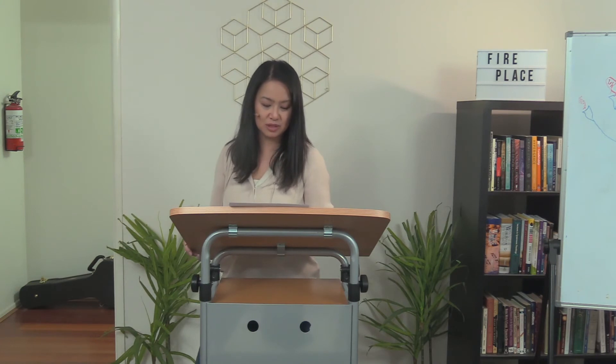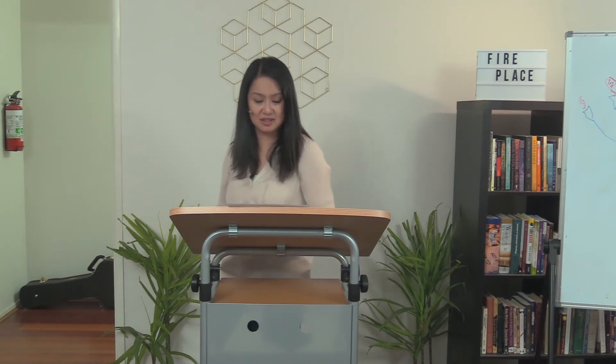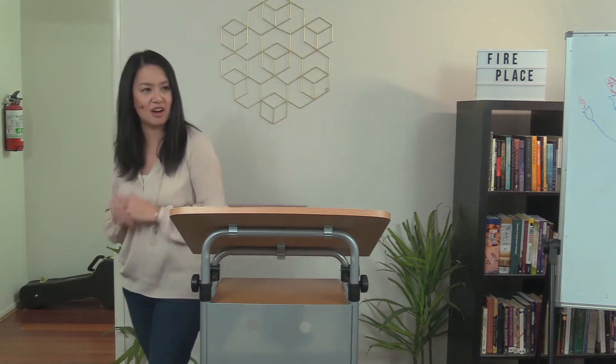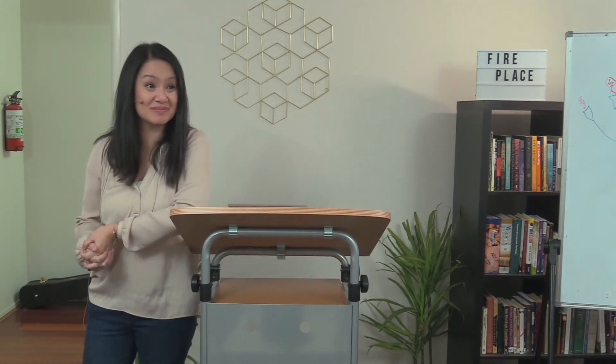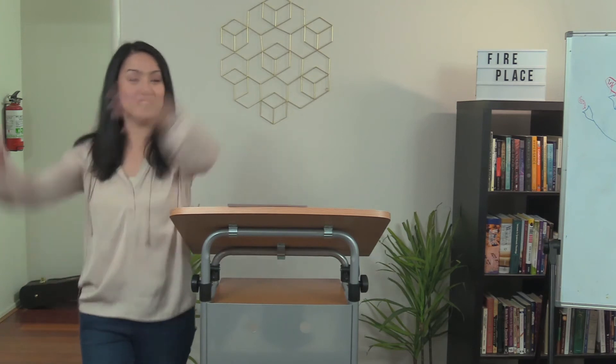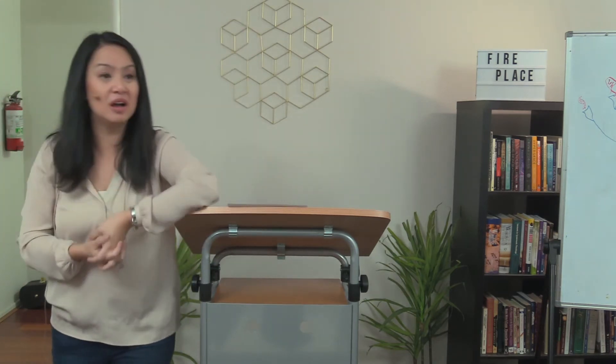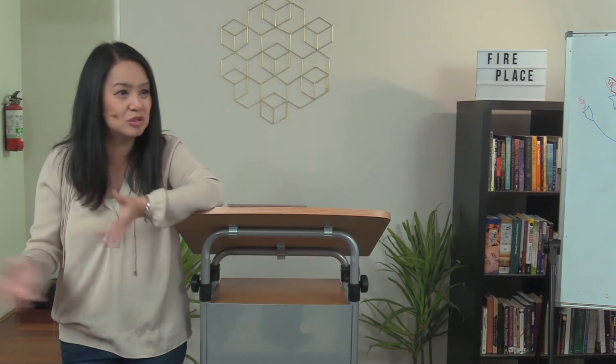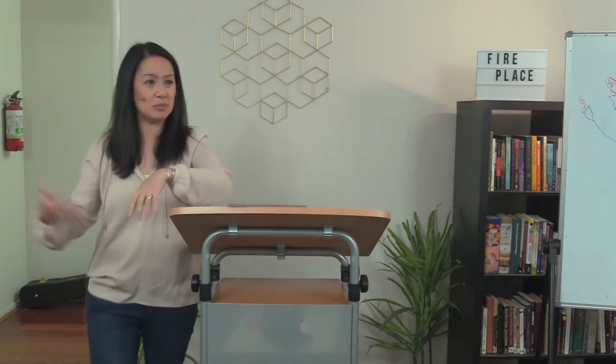Isaiah 5:24. Therefore as tongues of fire lick up straw, or stubble, and as dry grass sinks down in the flames, so their roots will decay and their flowers blow away like dust. For they have rejected the law of the Lord Almighty and spurned the word of the Holy One of Israel. And this is an interesting verse. I love how it talks about tongues of fire. Where else in Scripture do we read about tongues of fire? Acts 2. And I want to bring out something here about tongues of fire.